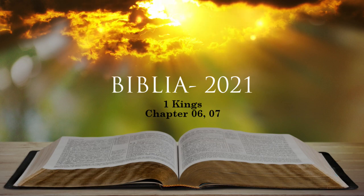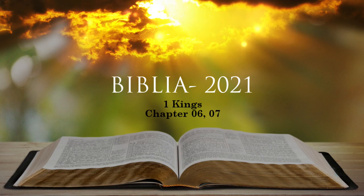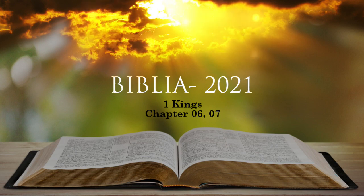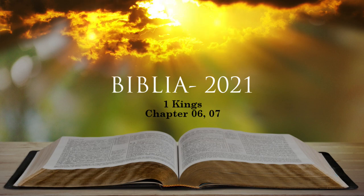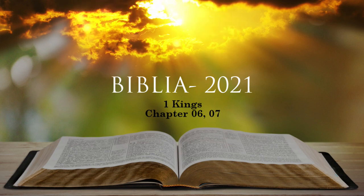This opening was round and with its basework it measured a cubit and a half. Around its opening there was engraving. The panels of the stands were square, not round. The four wheels were under the panels and the axles of the wheels were attached to the stand. The diameter of each wheel was a cubit and a half. The wheels were made like chariot wheels; the axles, rims, spokes and hubs were all of cast metal. Each stand had four handles, one on each corner, projecting from the stand. At the top of the stand there was a circular band half a cubit deep. The supports and panels were attached to the top of the stand. He engraved cherubim, lions and palm trees on the surfaces of the supports and on the panels in every available space with wreaths all around. This is the way he made the ten stands.